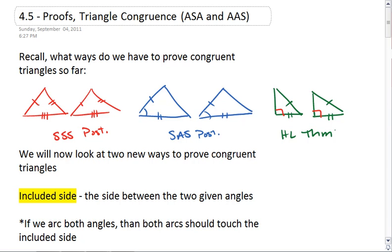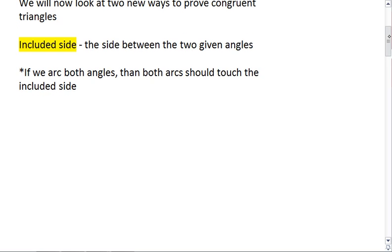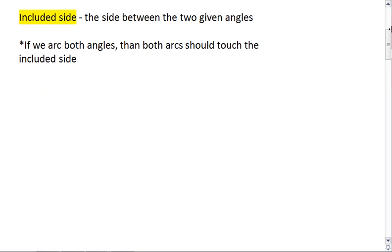We're now going to look at two new ways to prove congruent triangles. Before we do so, we need to make sure that we understand what included side means, and that is the side between the two given angles.